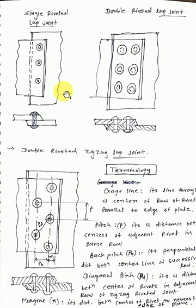To summarize: single riveted lap joint, double riveted lap joint, and double riveted zigzag lap joint. If you have 3 rows, then it is triple riveted; if you have 4 rows, then it is quadruple riveted.